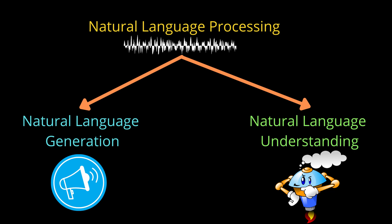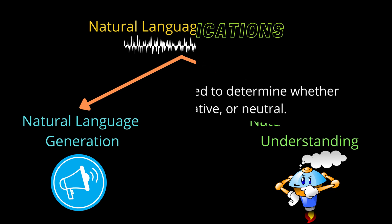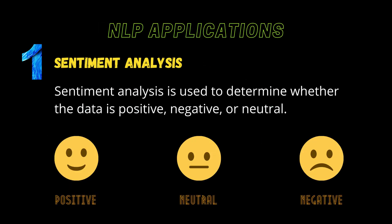Let us now look at the different applications of NLP. Sentiment Analysis: NLP is used in social media platforms such as Twitter and Facebook to analyze different kinds of sentiment and categorize them into positive, negative, or neutral sentiment. Twitter uses sentiment analysis to combat hate speech. Companies also use sentiment analysis to find how a particular product is performing in the market based on customer reviews.